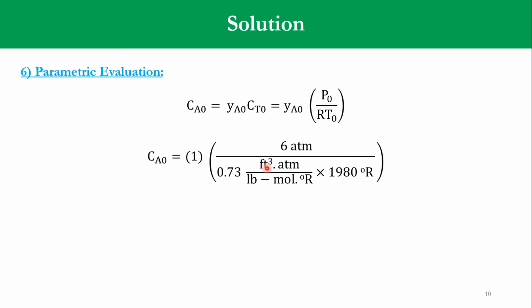So, accordingly, 1, 6 atm, 0.73 cubic feet atm over pound mole degree rankin into 1980 degree rankin. So accordingly, that CA0 is equal to 0.00415 pound mole per cubic feet or 0.066 mole per cubic decimeter. We know the English units conversion and SI units conversion as well.